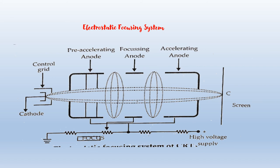Focusing System — Electrostatic Focusing System: This is the diagram of the electrostatic focusing system. As you can see, there are pre-accelerating anodes, focusing anodes, and accelerating anodes. The electrostatic focusing system of CRT consists of a pair of pre-accelerating anodes, a focusing anode, and an accelerating anode. These anodes are cylindrical in form with small openings located in the center of each cylinder along the axis of the tube. The electrons coming out of the control grid are accelerated by the high voltage applied to the accelerating anode. These electrons have a tendency to diverge from each other.